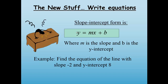Since we have a slope and y-intercept, we can right away use the formula y equals mx plus b. We can just replace the m by negative 2, which is the slope, and replace the b by the y-intercept, which is equal to a. So here we go, we already have the equation that we need.